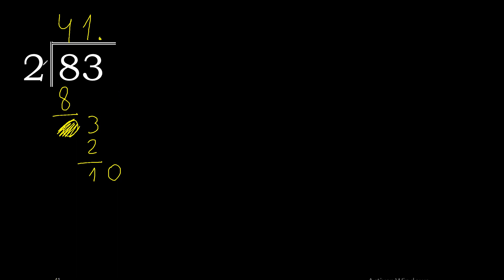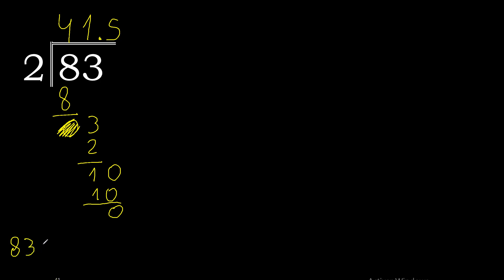2 multiplied by 6 is 12 — too big. 2 multiplied by 5 is 10. 10 minus 10 is 0. Therefore, 83 divided by 2 is 41.5.